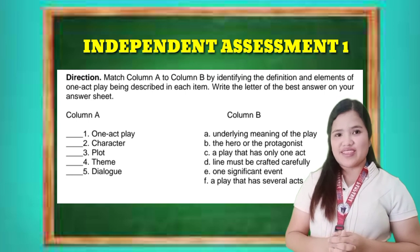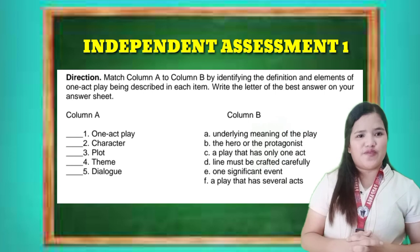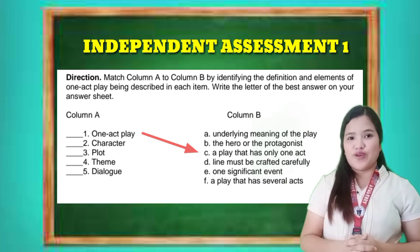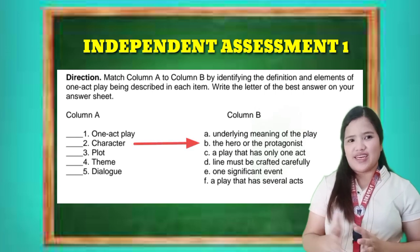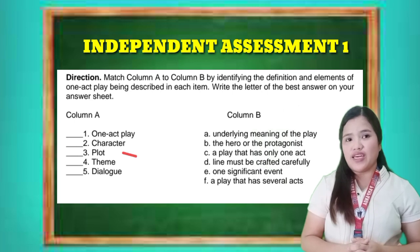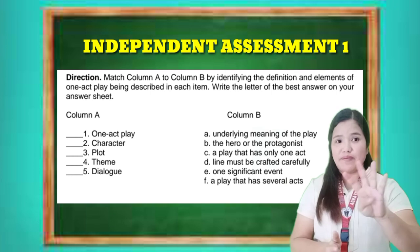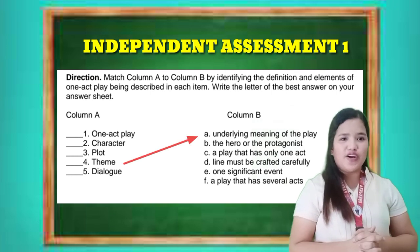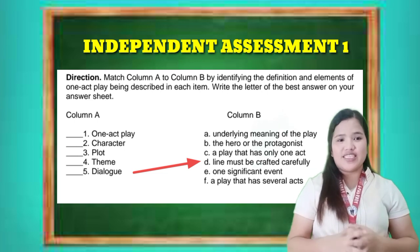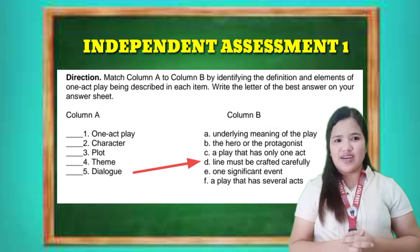Now let's check if you got the correct answers. Number one, one-act play refers to letter C — a play that has only one act. Number two, character refers to letter B — the hero or the protagonist. Number three, plot in a one-act play refers to letter E — one significant event. Number four, theme is letter A — the underlying meaning of the play. And finally, dialogue is the line that must be crafted carefully to be in line with the theme, the characters, and the incident in the one-act play.